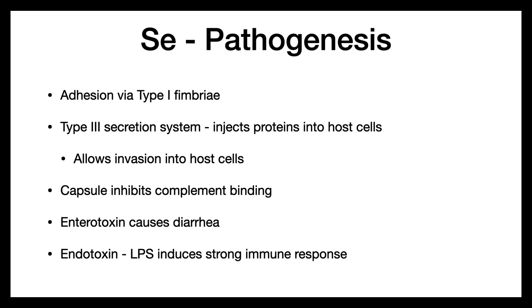Salmonella has several different proteins and features that make it a good pathogen. One is it has type 1 fimbriae that makes it easy to adhere to the small intestines. It then has a type 3 secretion system that injects proteins into the host. These proteins weaken the host cells and allow invasion of the Salmonella into host cells and past the epithelial barrier.